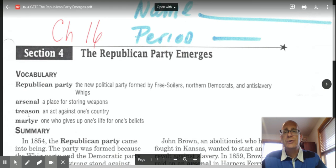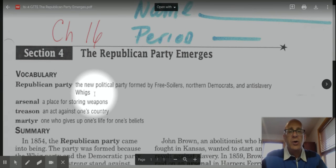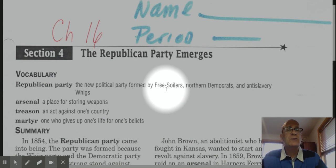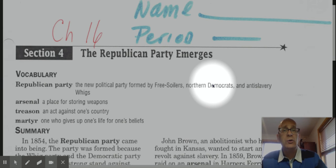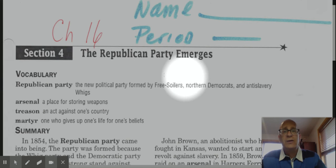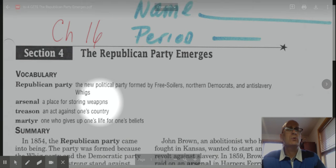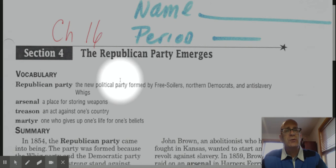The Republican Party emerges. We've got four vocab terms that we'll need to look at here. First, the Republican Party was a new political party formed in 1854, and it was made up of members of the Free Soiler Party, Northern Democrats, and anti-slavery Whigs. It is a brand-new Republican Party that will be created in 1854. Second word is arsenal — a place for storing weapons. We've seen this word before earlier in the year when we looked at the British marching out of Boston to find ammunition and weapons that the colonial militia were hiding. They were looking to find their arsenal of weapons.